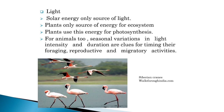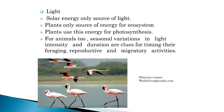The next abiotic factor is light. Solar energy is the only source of light. Plants use this energy for photosynthesis and are the only source of energy for the ecosystem. For animals, seasonal variation in light intensity and duration are clues for the timing of their foraging, reproductive, and migratory activities. We have seen different kinds of abiotic factors, and in the next lecture we will move to the next topic. Thank you.